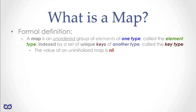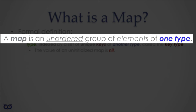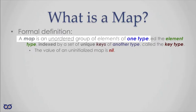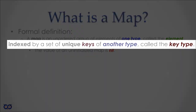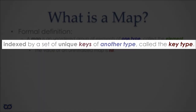The formal definition from the Golang documentation: a map is an unordered group of elements of one type. Like arrays and slices, all elements must be of the same type, but unlike them there is no order — you can't traverse from element zero and expect a consistent sequence. The type of elements is called the element type. Crucially, a map is indexed by a set of unique keys of another type — unlike arrays and slices where the index is always a non-negative integer.